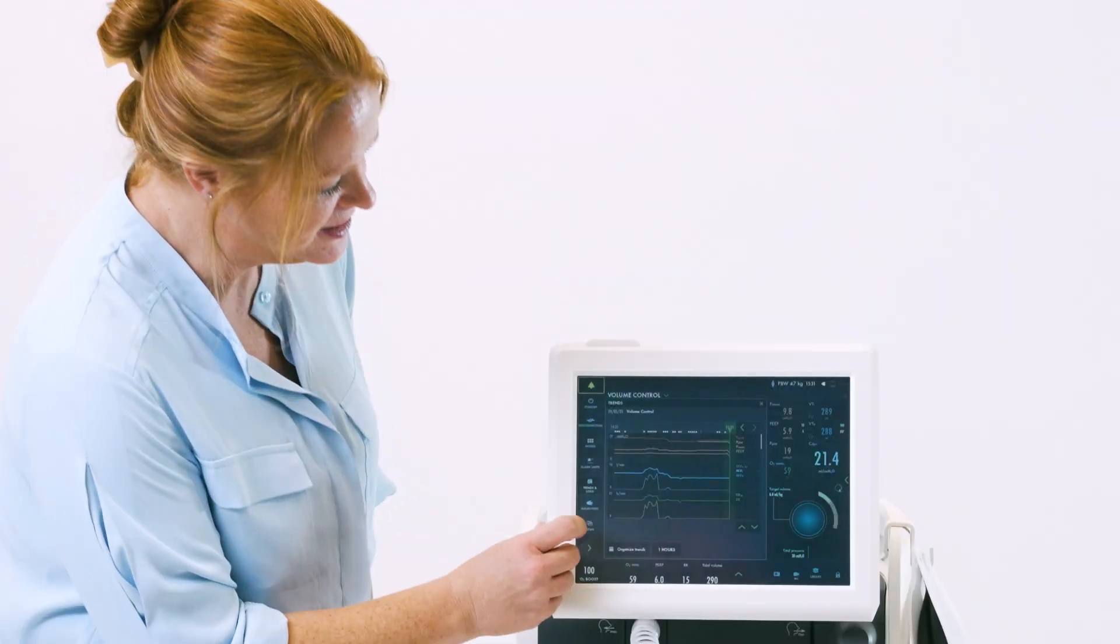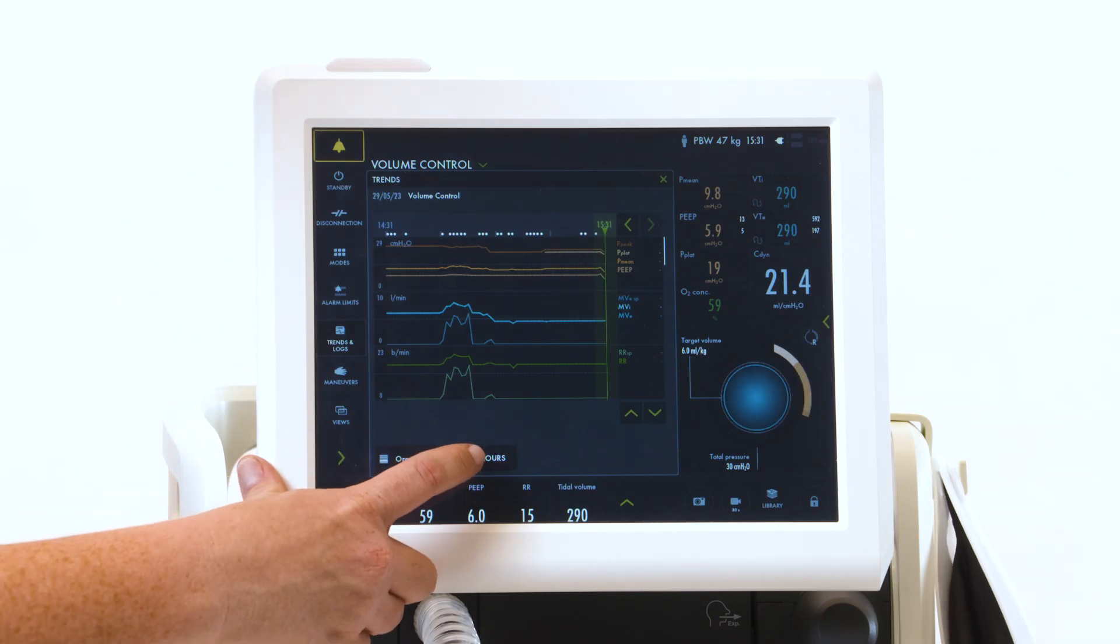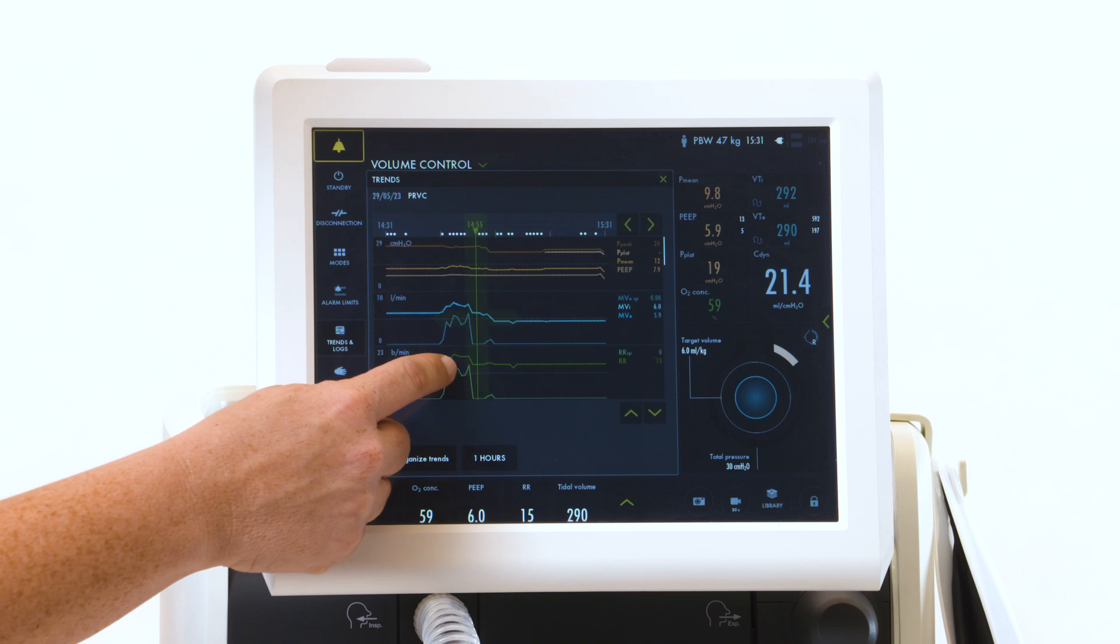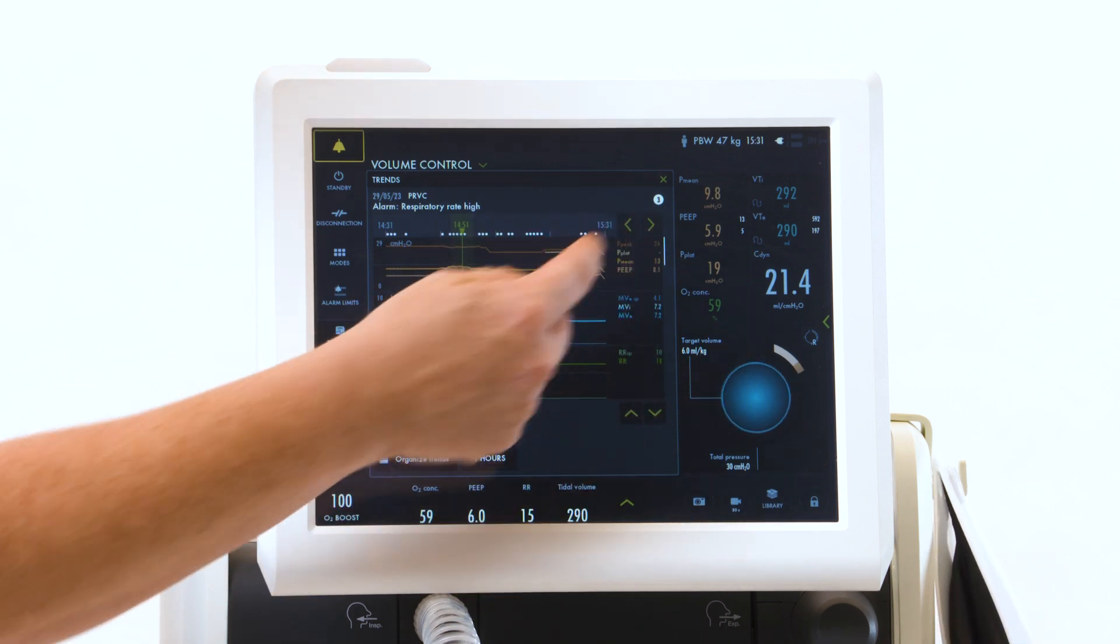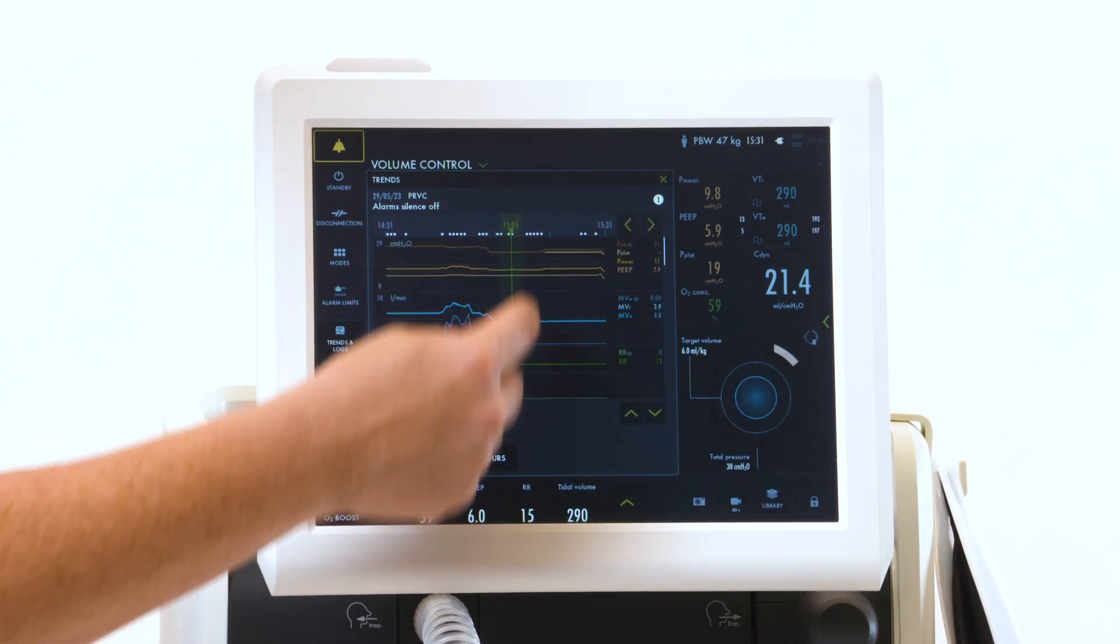When looking at your trends, you can look anywhere from an hour up to 72 hours of time. As you move your cursor, your numbers that appear will be the numbers along that axis.